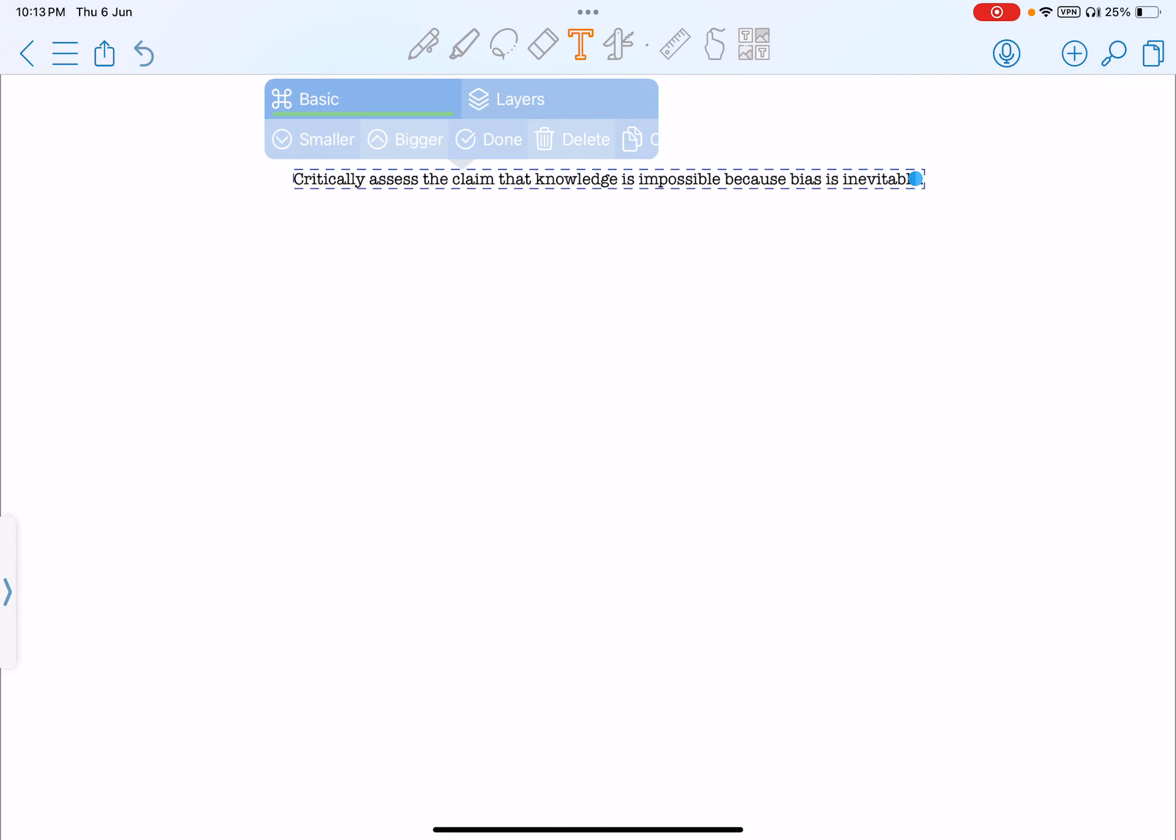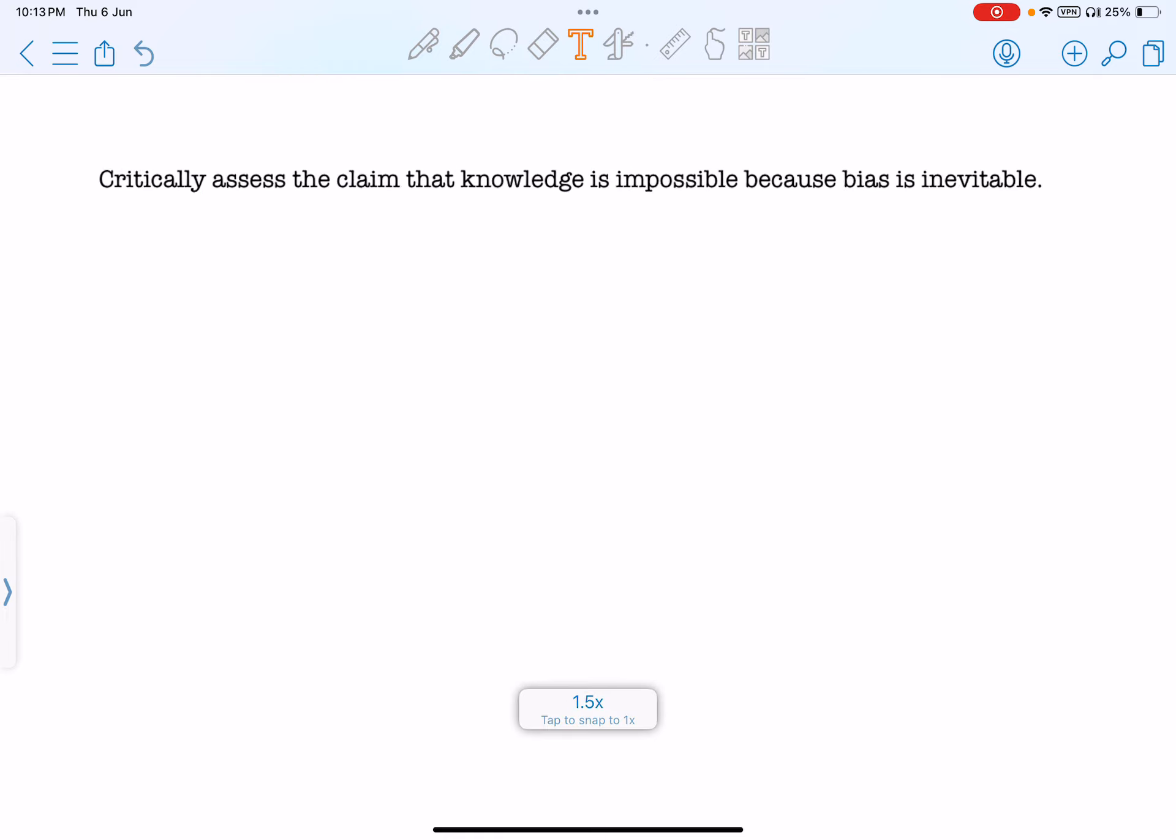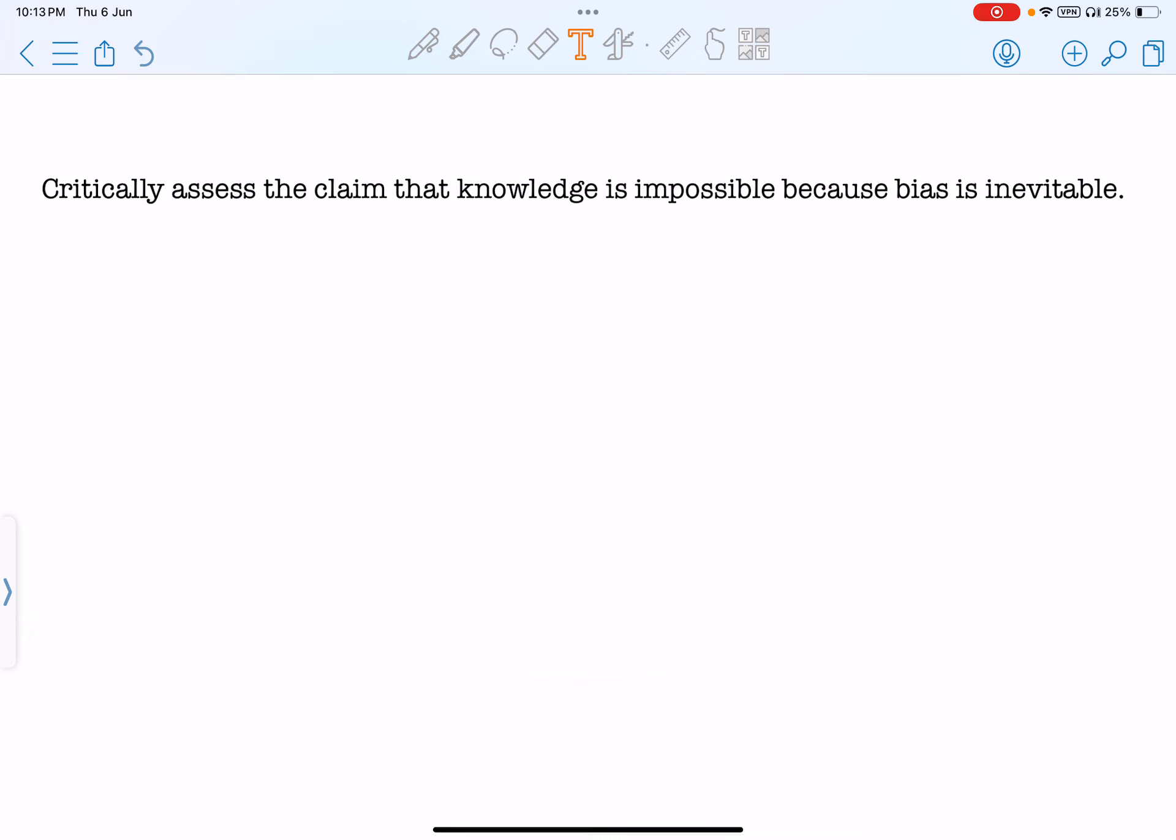Welcome to Philosophy with Shing, where we uncover the beauty behind philosophy. In today's episode, we'll be looking at a question critically assessed to claim that knowledge is impossible because bias is inevitable. That sounds like a great mouthful, so let's slowly dissect this large claim.